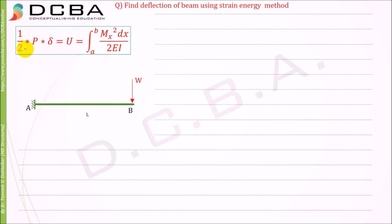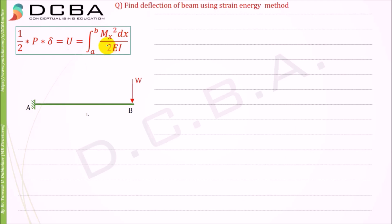The strain energy method is based on the formula: half into P into delta equals U, where U is the strain energy. The derivation of this formula was covered in our previous video lectures. The strain energy U is given as the integration from A to B of Mx squared dx upon 2EI, where Mx is the moment equation describing the bending moment profile for the entire beam.